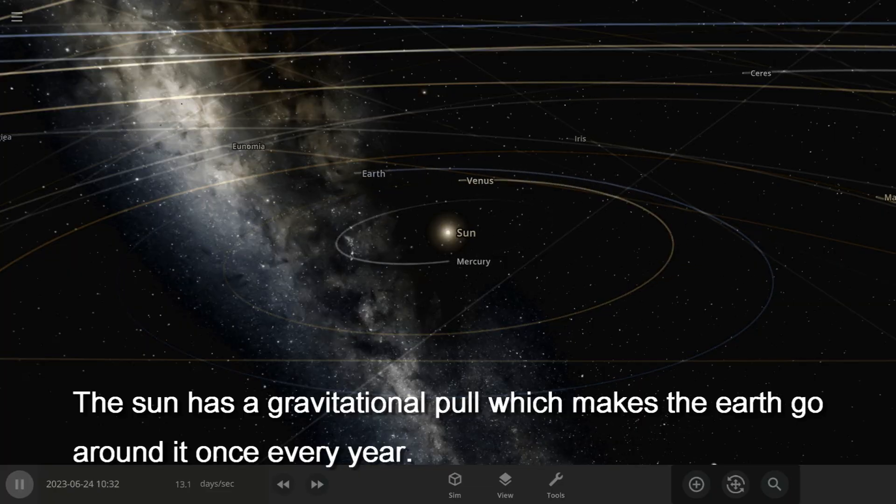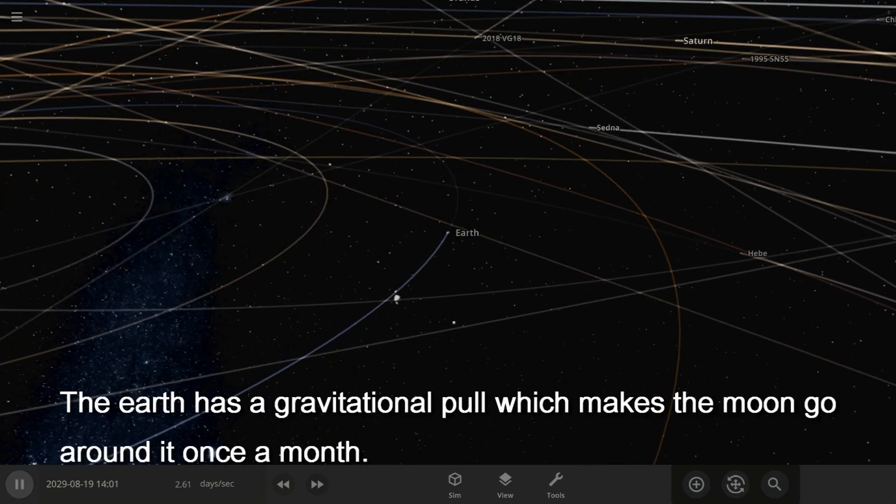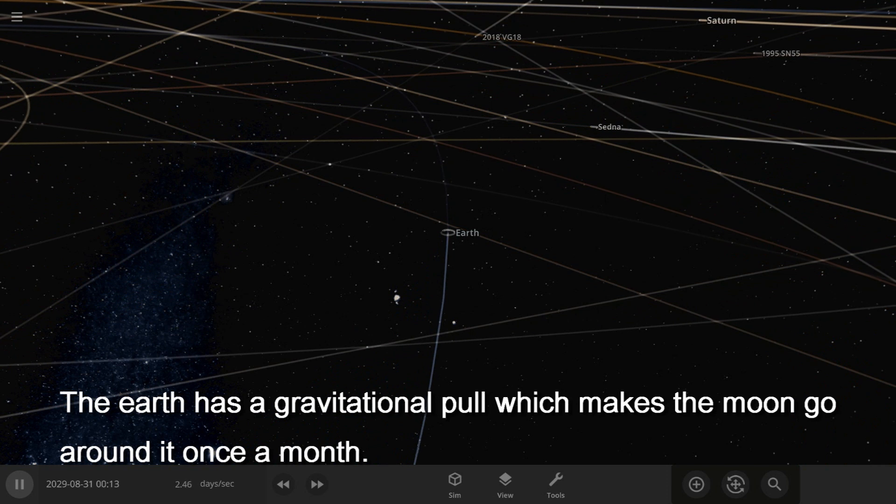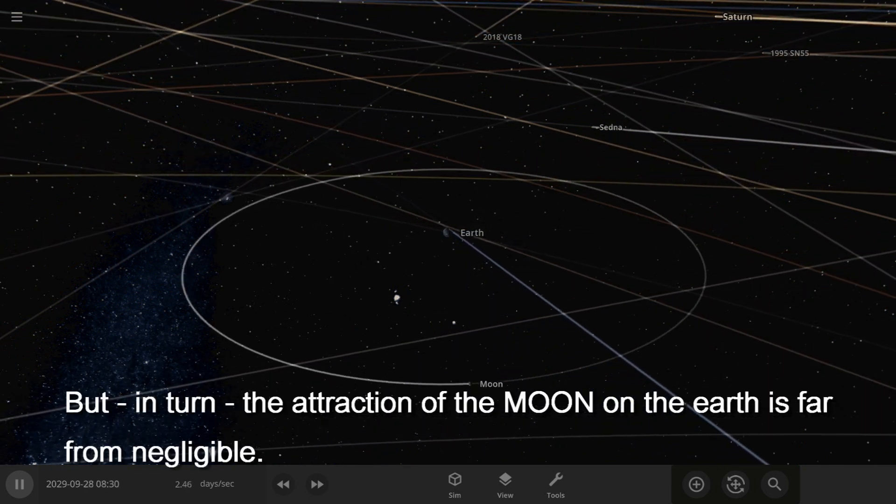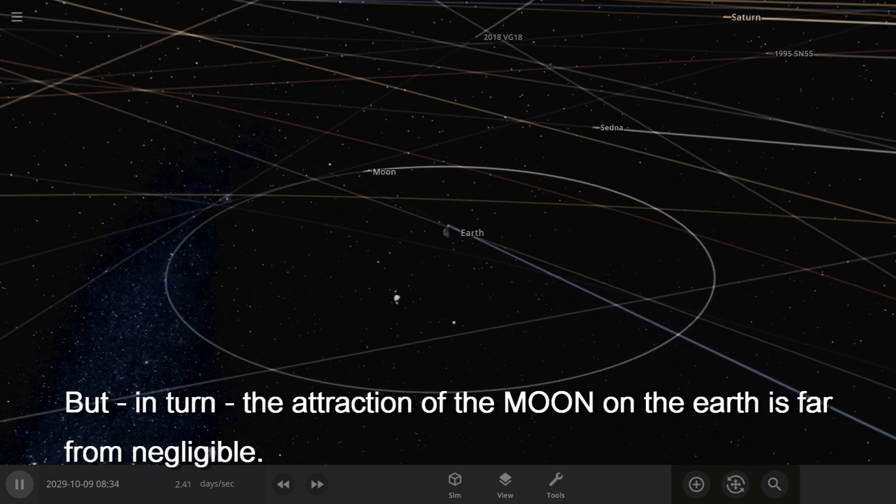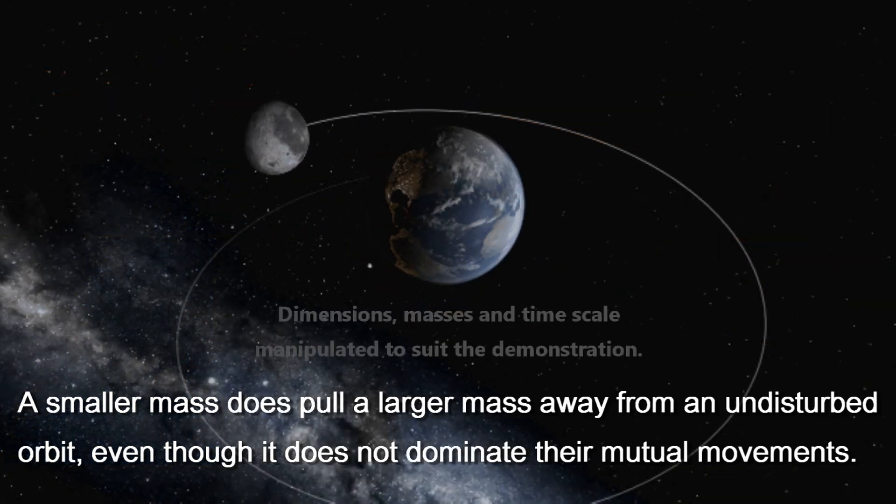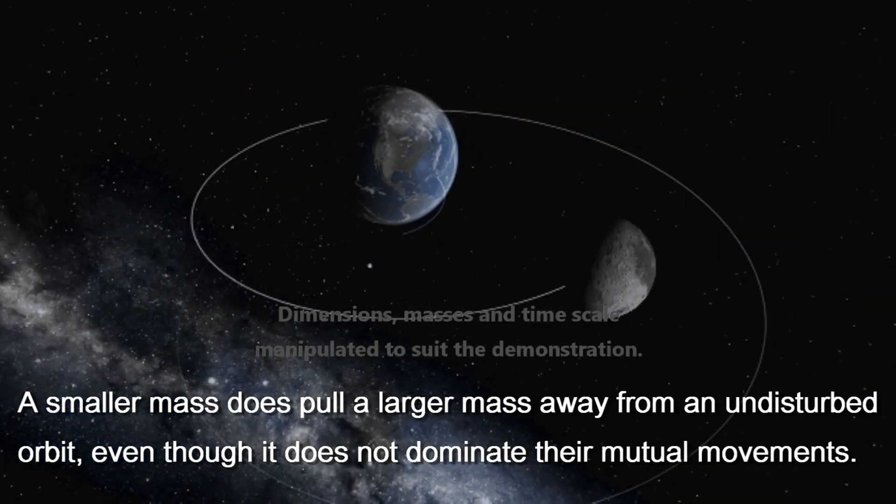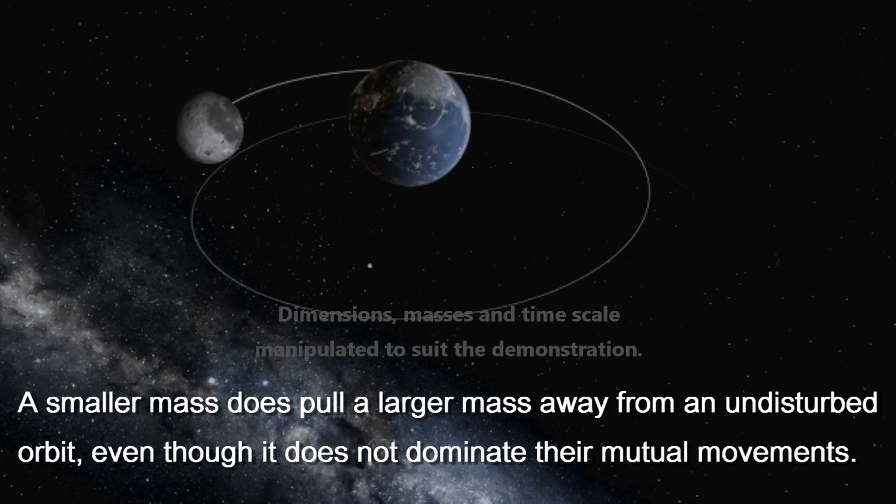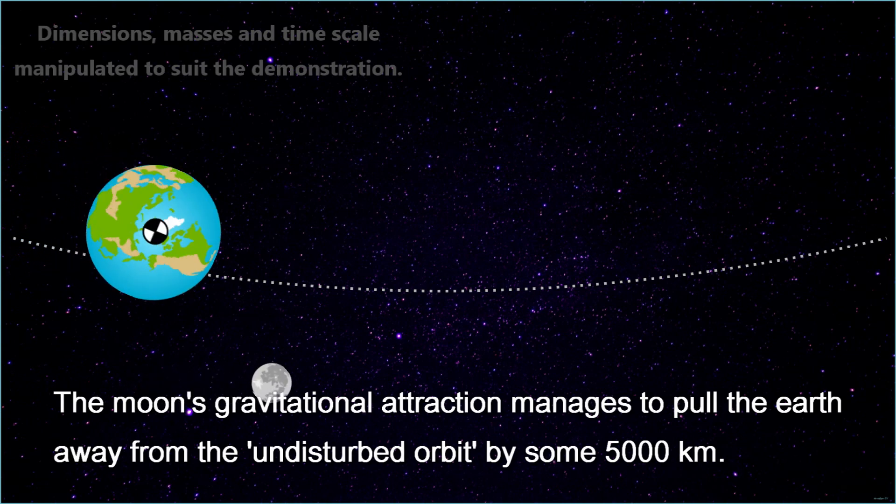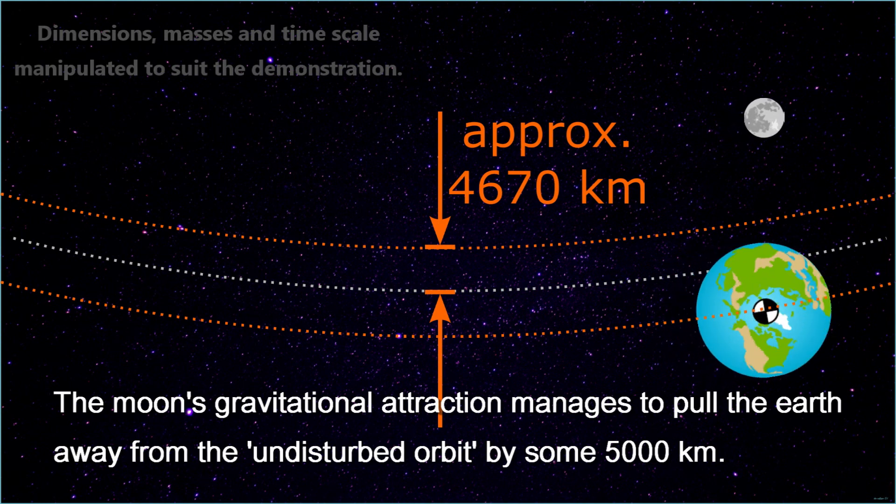The Sun has a gravitational pull which makes the Earth go around it once every year. The Earth has a gravitational pull which makes the Moon go around it once a month. But, in turn, the attraction of the Moon on the Earth is far from negligible. A smaller mass does pull a larger mass away from an undisturbed orbit, even though it does not dominate the mutual movement. The Moon's gravitational attraction manages to pull the Earth away from the undisturbed orbit by some 5000 kilometers.